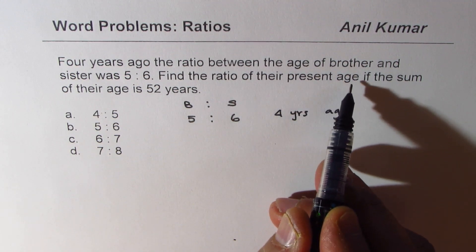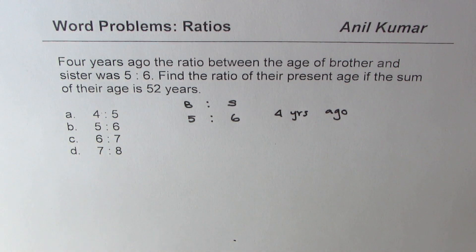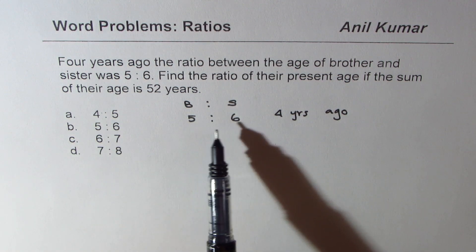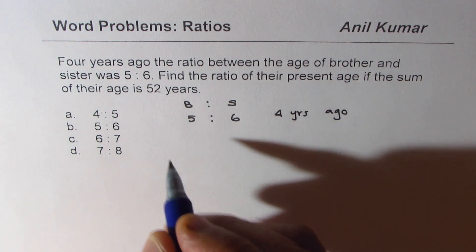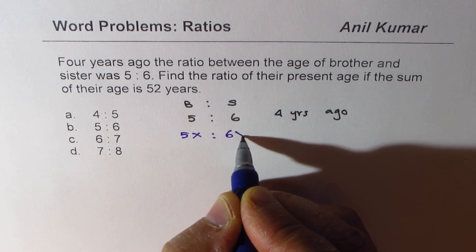Find the ratio of their present age if the sum of their age is 52 years. Now it's important to understand that whenever the ratio is given to us, it really means that we could write these numbers as 5x is to 6x, right.